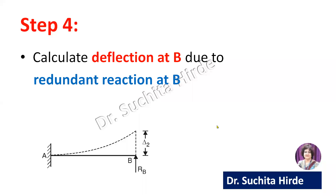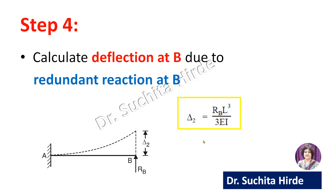Step 4 is to calculate the deflection at B due to the redundant reaction at B. This is a standard case of a cantilever subjected to a point load at the free end — the only difference is the load is upward, not downward. We consider Rb as a load on the cantilever beam and use the standard formula to calculate delta 2. The standard formula is PL³ upon 3EI, where P is Rb. So delta 2 equals Rb L³ upon 3EI.